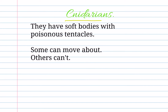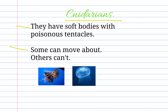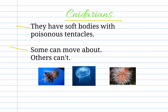Cnidarians — remember the pronunciation, please: cnidarians. They have soft bodies with poisonous tentacles. Some can move about and others can't. And I am giving you some more examples. These are two different types of jellyfish, and this one is a kind of anemone.